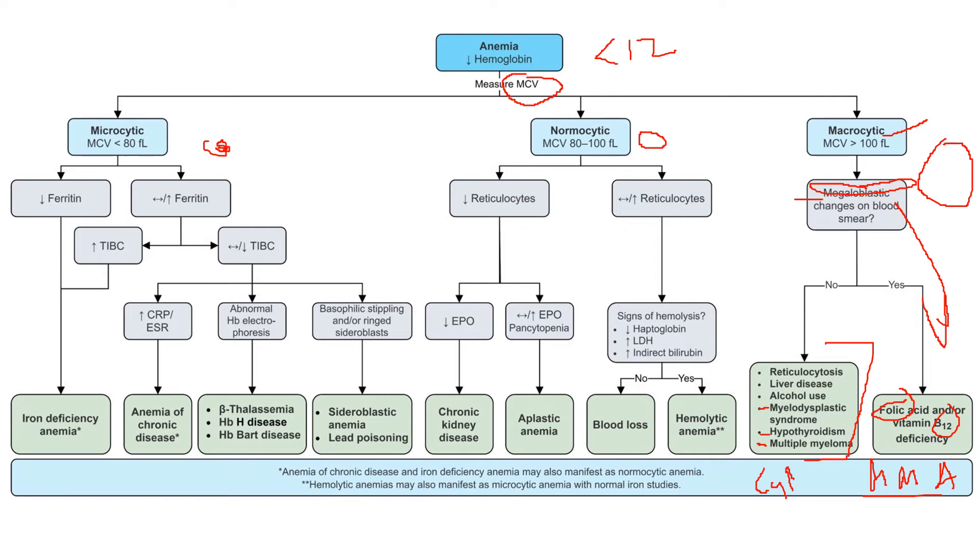You're going to see an M spike on your protein electrophoresis, plasma cells are going to be high in the bone marrow biopsy. Hypothyroidism you want to look for a TSH. And myelodysplastic syndromes, I'll let you refer to heme-onc for those.